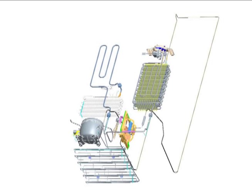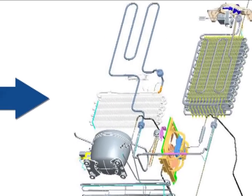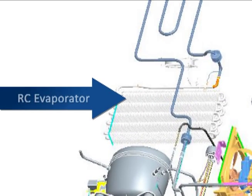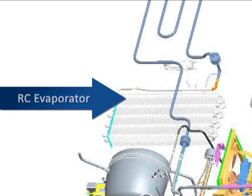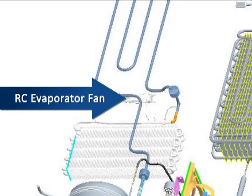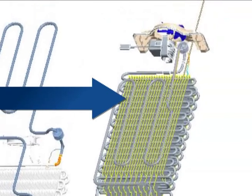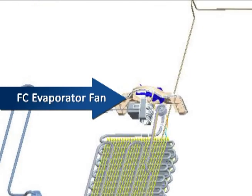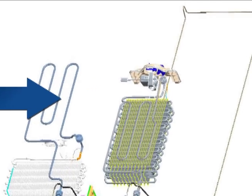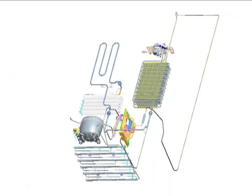Let's begin by identifying the cooling system components. In the refrigeration compartment, we find the RC evaporator and RC evaporator fan. In the freezer compartment, we find the FC evaporator and the FC evaporator fan. These two evaporators and fans operate independently from each other.